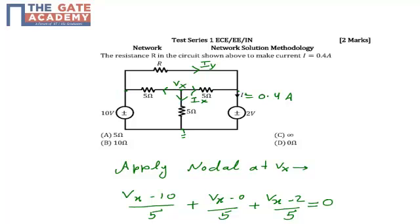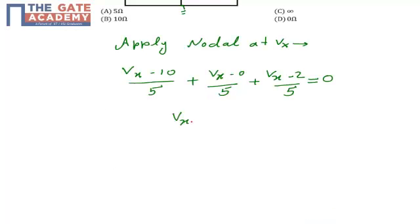So all these three currents equal zero. If I solve this equation, I will get the value of Vx as 4 volts.